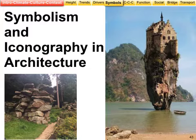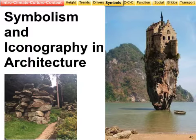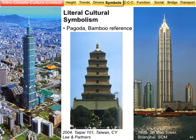Moving on to aesthetics and symbolism: one of the movements in Asia is to try and find a symbolic identity. Both the Taipei 101 and the Jin Mao are assumed to be adopting or recognizing the form of the pagoda, and also the form of bamboo — which is a very sound structural concept. The architects certainly for Taipei 101 have said exactly that.